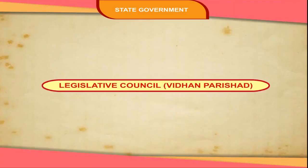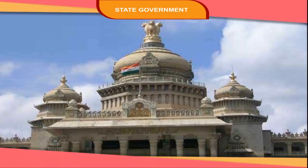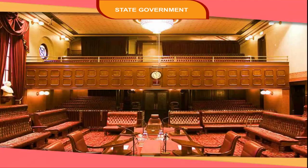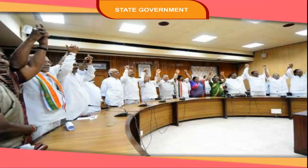The Legislative Council, or Vidhan Parishad, is also known as the Upper House in the State Legislature. The maximum strength of the Legislative Council is one-third of the total strength of the Legislative Assembly, subject to a minimum of 40 members. The Legislative Council is a permanent body as it cannot be dissolved. One-third of its members retire after every two years and elections are held for vacant seats. The term of office of a member is six years.